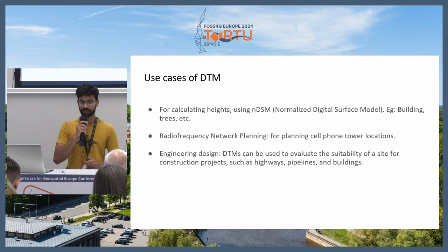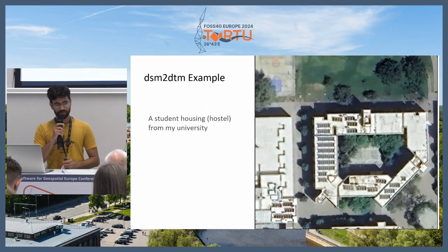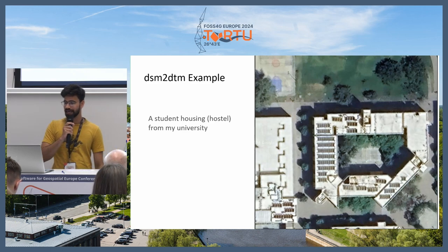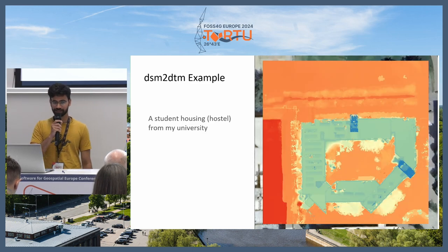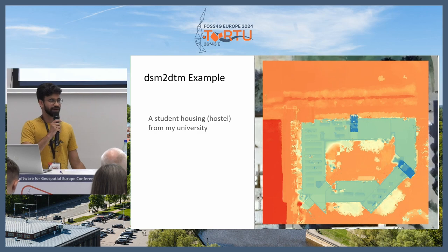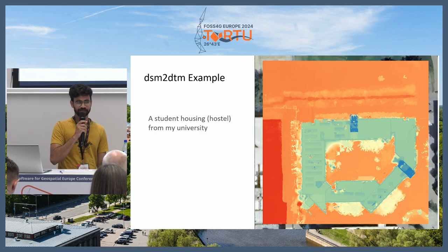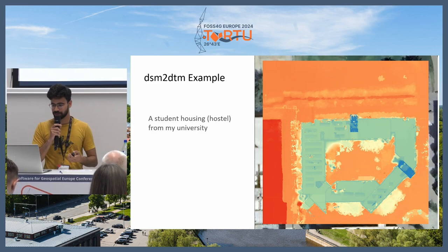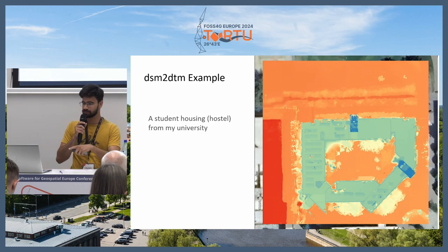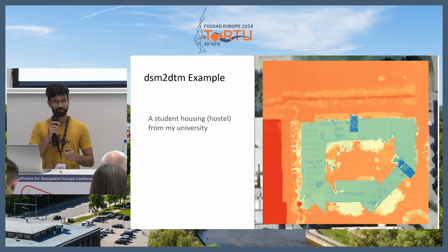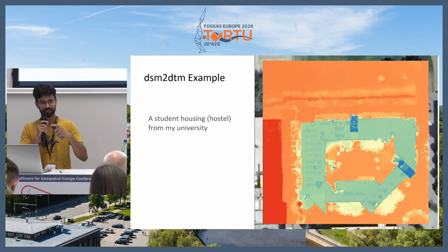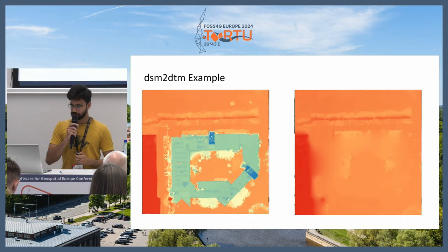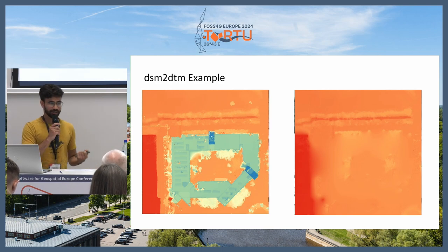Let's look at an actual example. On the right is student housing from my university with the corresponding DSM. I collected the data back in 2018 using a DJI Phantom 3 Advanced — multiple overlapping images — and the DSM was made using structure from motion in Agisoft PhotoScan. The red values represent the lowest elevation values and dark blue represents the highest. This is the resulting DTM.